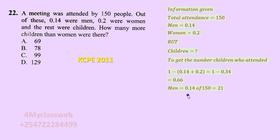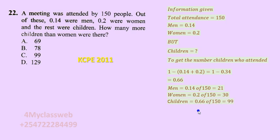To get the actual number of men, take 0.14 of 150 — remember 'of' means multiplication — which gives 21 men. For women, 0.2 of 150 gives 30. For children, multiply 0.66 by 150 to get 99.